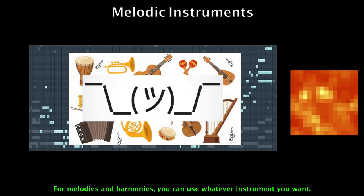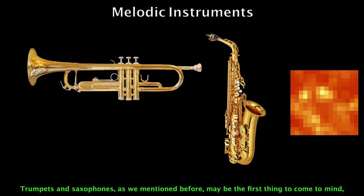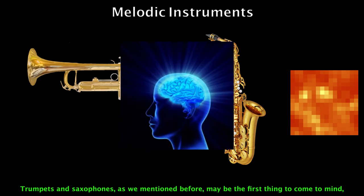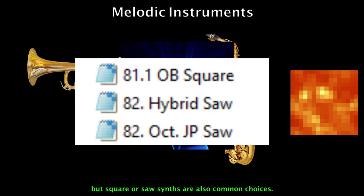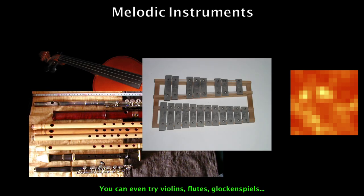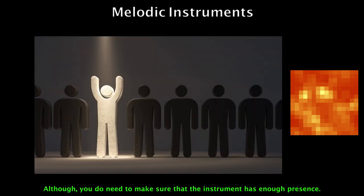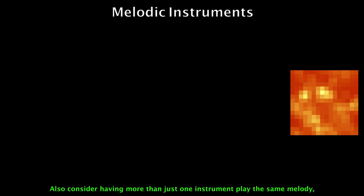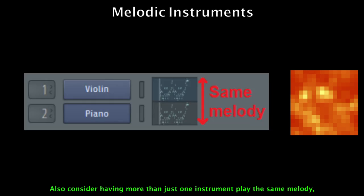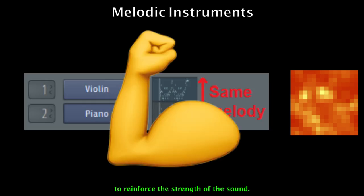For melodies and harmonies, you can use whatever instrument you want. Trumpets and saxophones may be the first thing to come to mind, but square or sawtooth synths are also common choices. You can even try violins, lutes, or glockenspiels, though it depends on what energy level your melody has. Anything goes, although you do need to make sure that the instrument has enough presence. Also consider having more than just one instrument play the same melody to reinforce the strength of the sound.